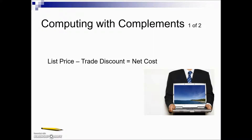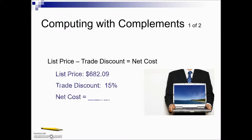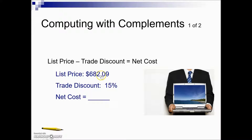In this video we're going to take a look at computing trade discounts to find net costs using complements. Here we have an example of a list price of $682.09 with a trade discount of 15%. To calculate the net cost, we normally would take 15% of our base, and once we find that, we would subtract that from our list price.